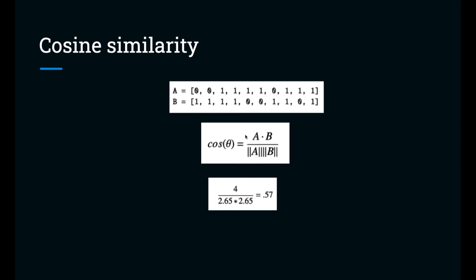The norm of A is going to be the square of each term added together. So that's going to be one, two, three, four, five, six, seven. And then we take the square root of seven, which is 2.65. B also happened to have the same norm. So when we calculate this out, we get a cosine similarity measure of 0.57.